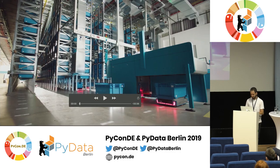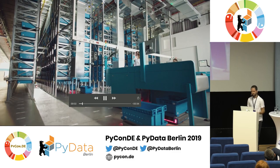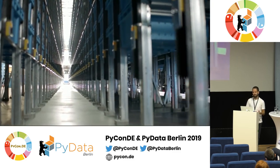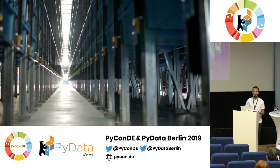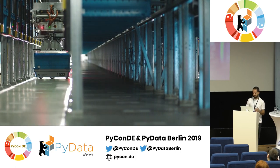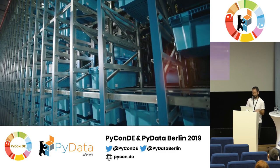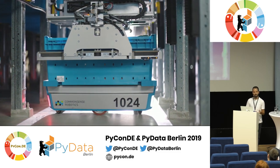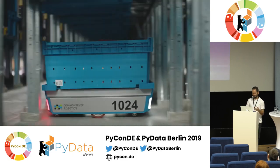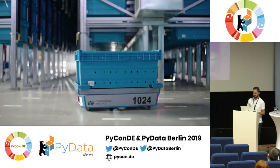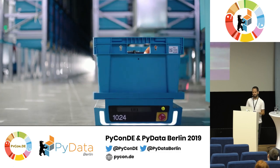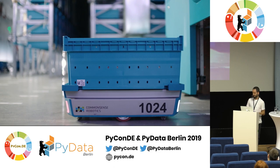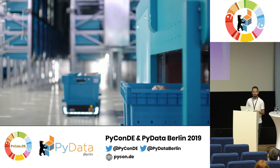At Fabric we build micro-fulfillment warehouses where online orders are picked and delivered to customers. Most of the work is done by robots. In the video you can see two types: ground robots that move on the floor, and lift robots that move on the shelving units. The lift robots take totes from the shelving unit and put them on the ground robots, which bring the totes to the picking stations where items are picked and later delivered.